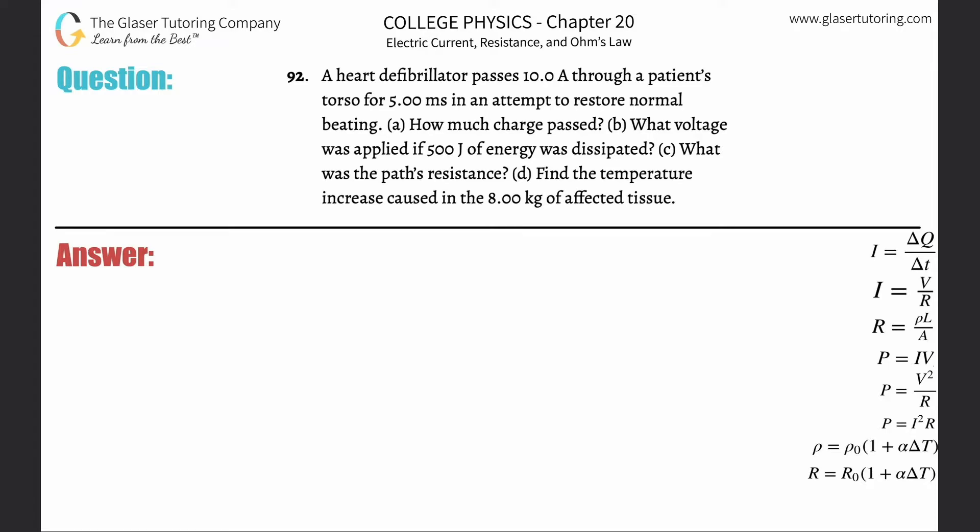Number 92. A heart defibrillator passes 10 amps through a patient's torso for 5 milliseconds in an attempt to restore normal beating. Letter A: How much charge is passed?